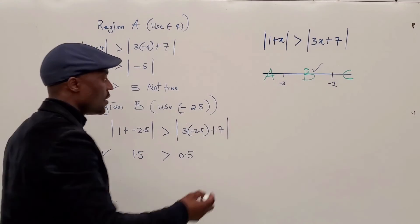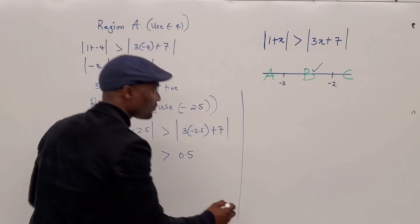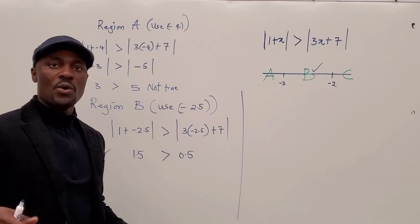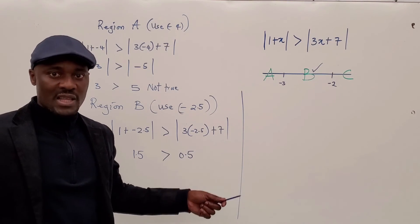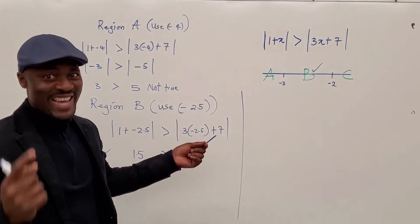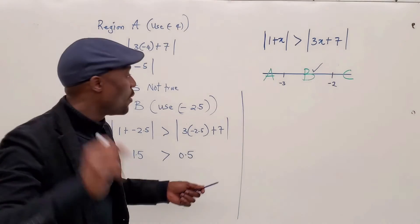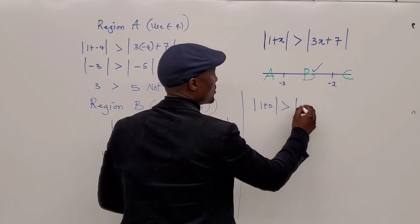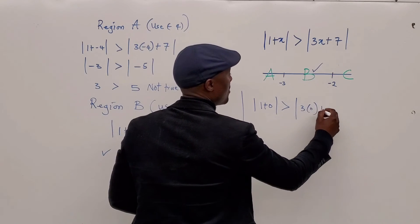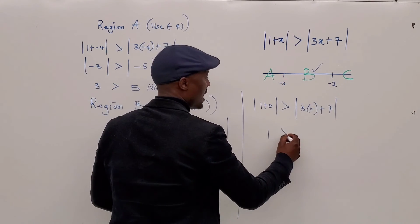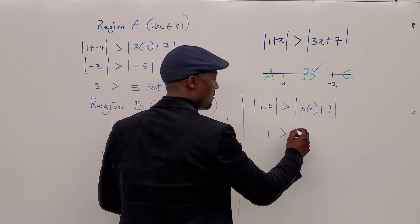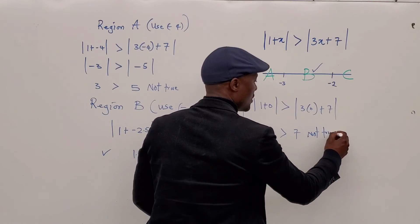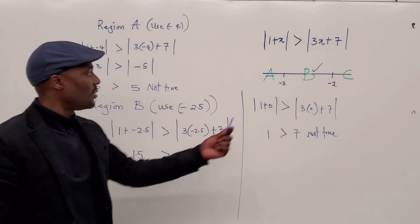Now let's test region C — any number greater than negative 2, like negative 1, 0, or beyond. Let's choose 0. The absolute value of 1 plus 0 is greater than the absolute value of 3 times 0 plus 7. This gives us 1 greater than 7, which is not true. So region C is not accepted. The only region that satisfies the inequality is region B.